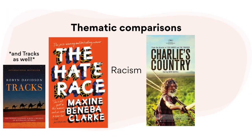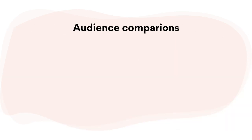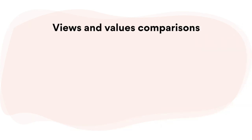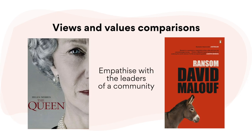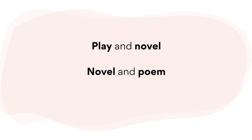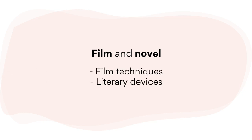There are several comparison points you can discuss throughout your essays, including thematic comparisons — like how The Hate Race and Charlie's Country explore racism — audience comparisons, like how I Am Malala and Pryor have been written for modern audiences, and views and values comparisons, like how the writers of both The Queen and Ransom empathize with leaders for whom holding up a public image is a challenge. Notice though, how these comparison points could apply to any text pair — a play with a novel, a novel with a poem. For today's video, we'll focus specifically on comparison points that are only possible when studying a film and novel together: film techniques and literary devices.